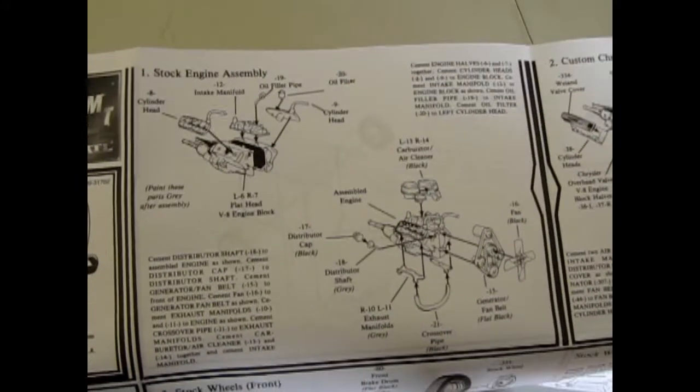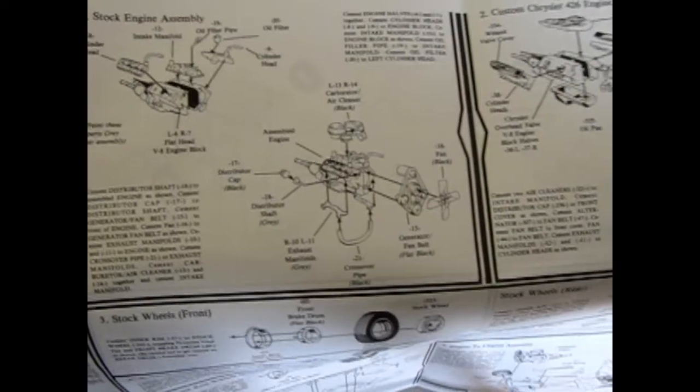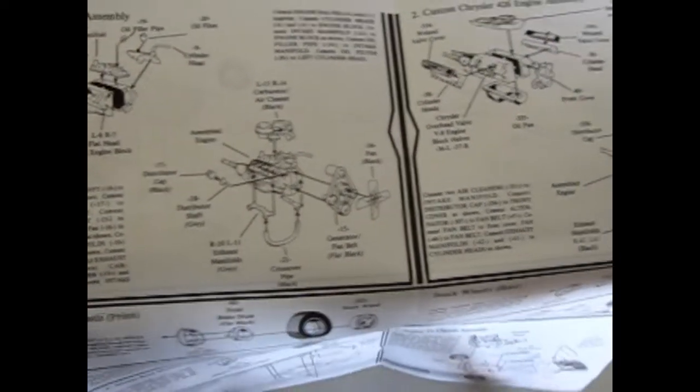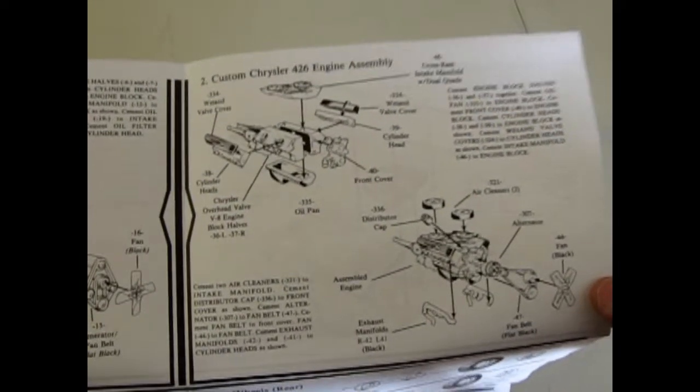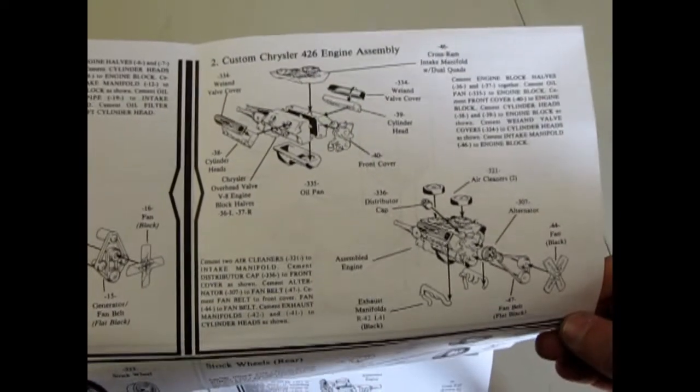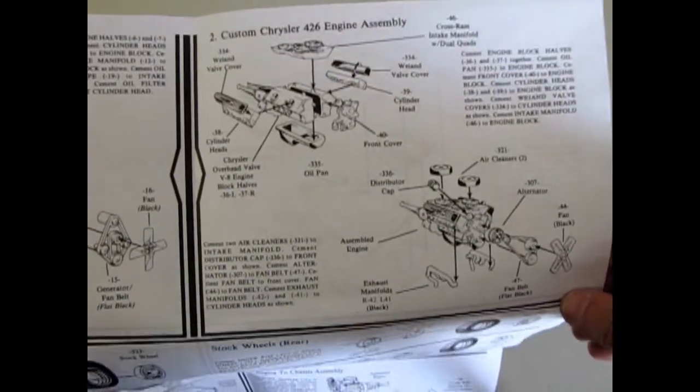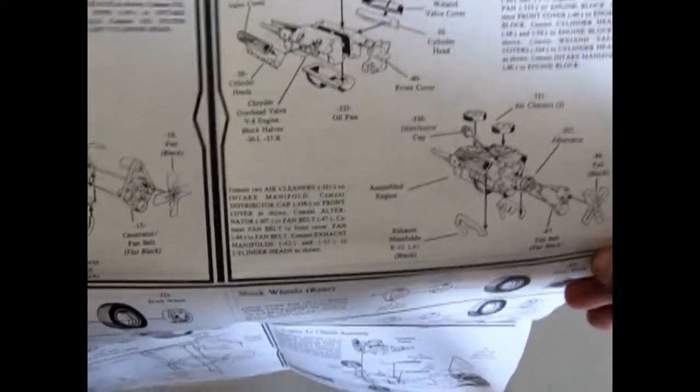So here we go, we've got the Mercury V8 with a big huge air cleaner and then when you get into the custom engine it's the Chrysler 426 and this is a rare engine because it's got the split carburetors on it which would put it about 1962 sort of era.